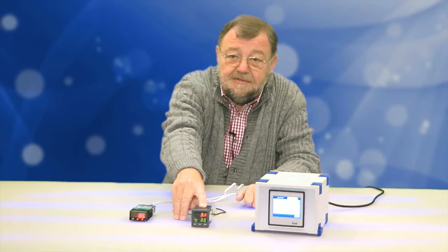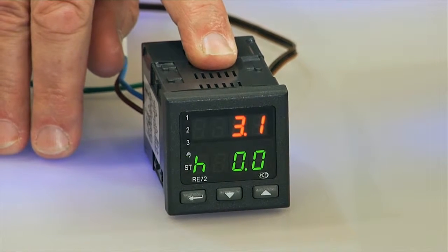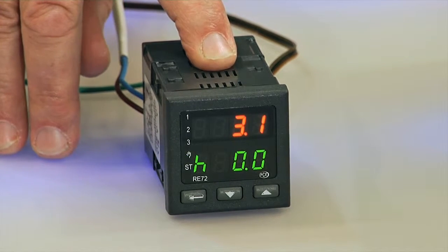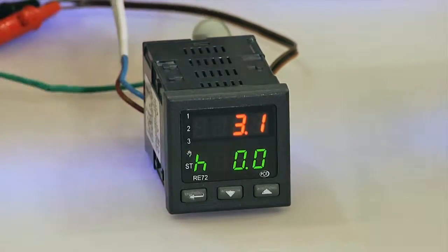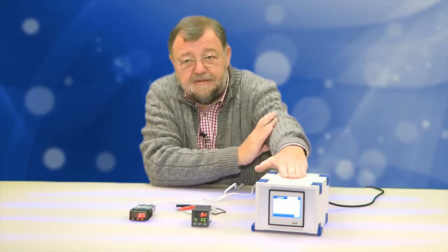The next one with a two row display with four places. You can read should values and are values simultaneously. You do not have to read them after another. This device with the term RA72 is also from PCE.